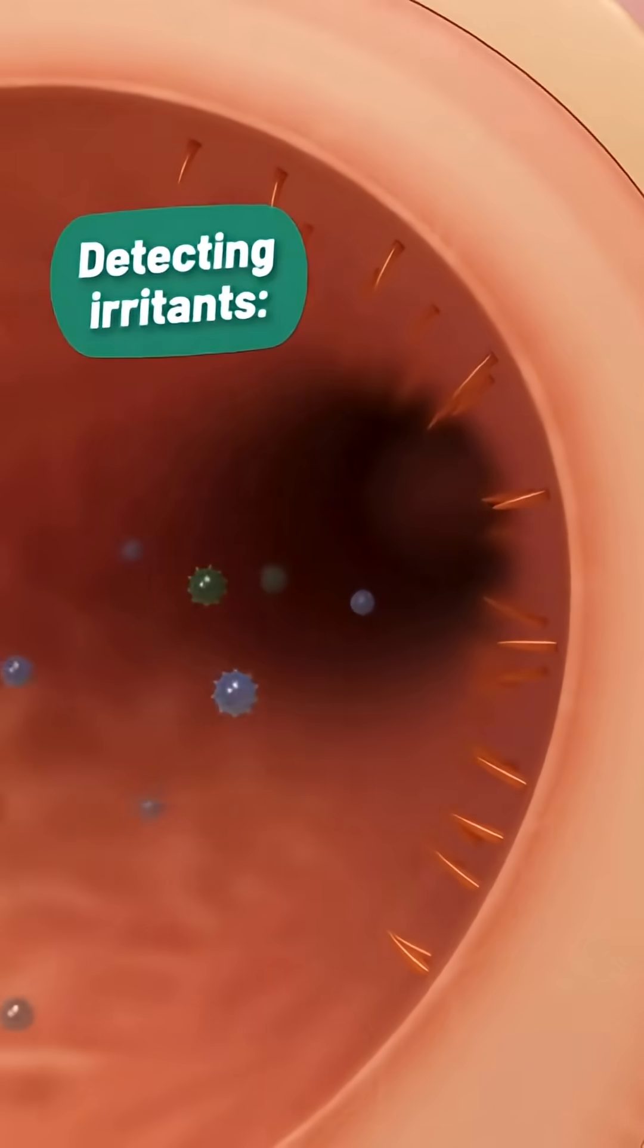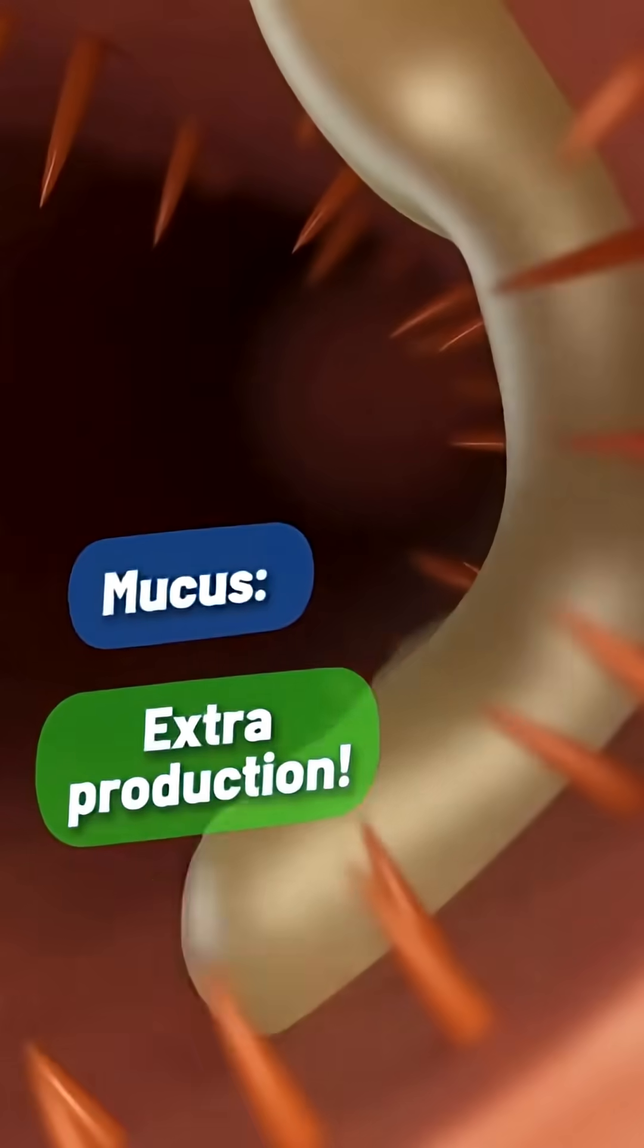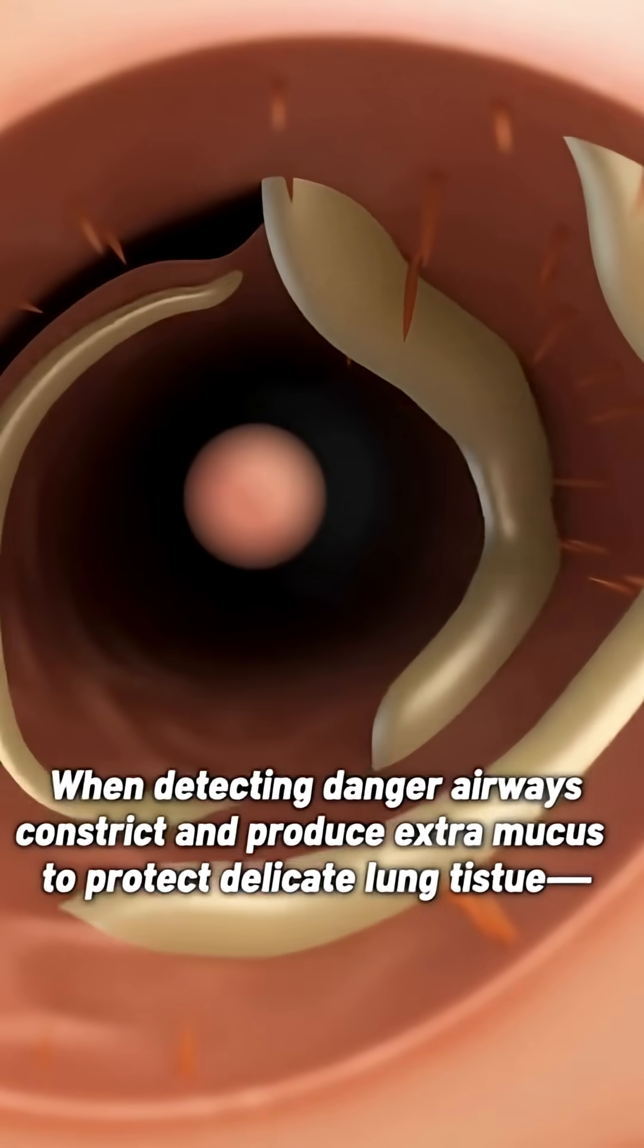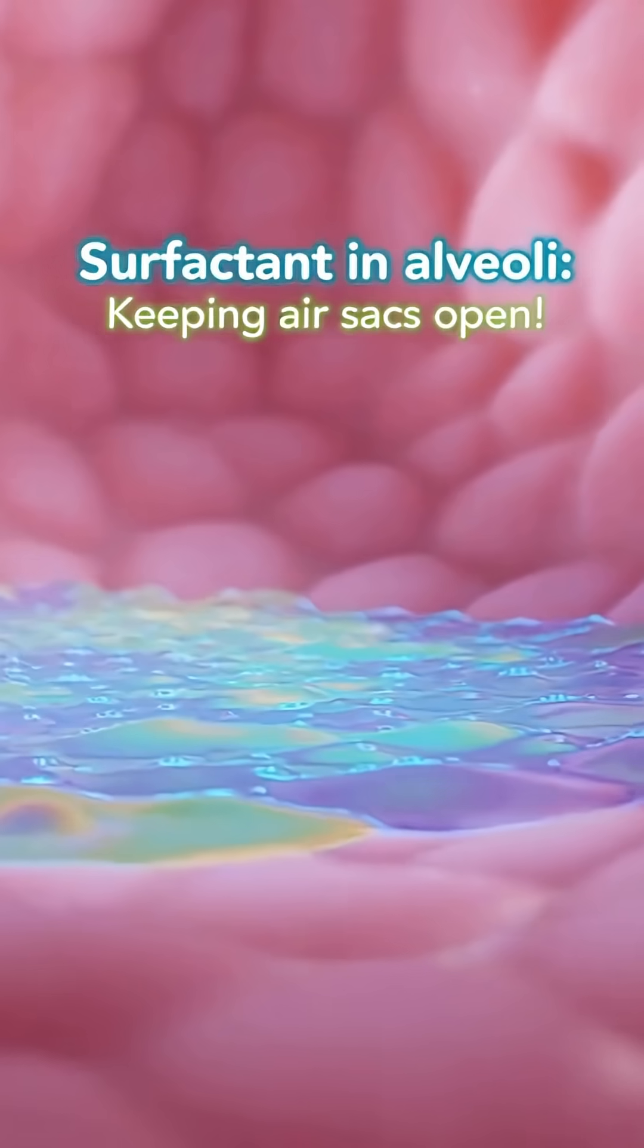Airway control. Detecting irritants. Constricting passages. Emergency shutdown. Extra production. Inflammation starting. When detecting danger, airways constrict and produce extra mucus to protect delicate tissues.